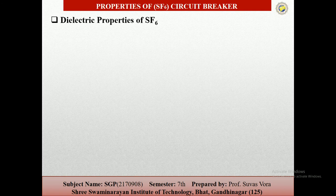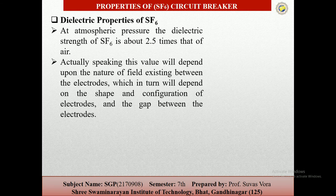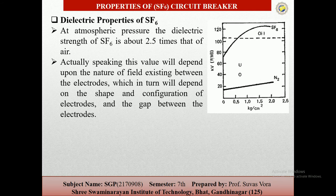Regarding dielectric properties: the dielectric strength of SF6 at atmospheric pressure is 2.35 times that of air, and it is 30 percent less than the dielectric strength of oil. At higher pressures this value depends upon the nature of the field between the electrodes, which in turn depends upon the shape and configuration of the electrodes. This property permits smaller clearance and smaller size of equipment for the same kV rating.